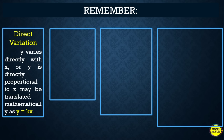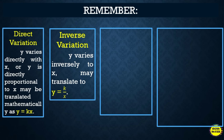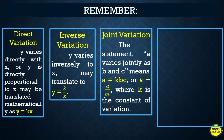Let's review how we translate the different types of variation from our previous lesson. In inverse variation, if y varies inversely as x, it translates to y = k/x. For joint variation, the statement 'A varies jointly as B and C' means A = kBC, or k = A/(BC), where k is the constant of variation.